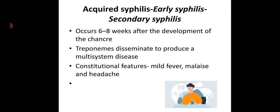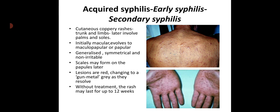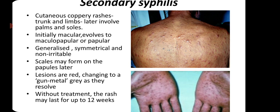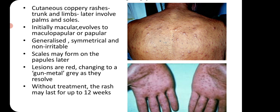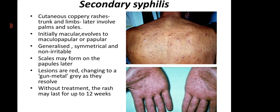Secondary syphilis in acquired early syphilis occurs 6 to 8 weeks after the development of the chancre. Treponemes disseminate to produce a multi-system disease. There will be constitutional features like mild fever, malaise, and headache. Cutaneous coppery rashes appear in secondary syphilis, usually seen on the trunk and limbs, then later involving palms and soles. Initially the lesion is macular, then evolves to maculopapular, then papular. It is a generalized, symmetrical, non-irritable rash, and scales may form on the papules later.